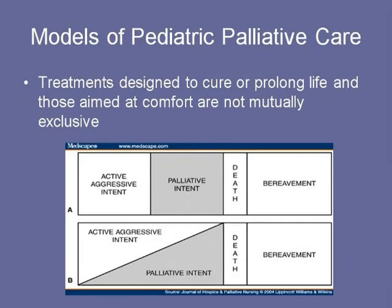If we look at the models of pediatric palliative care, treatments designed to cure or prolong life and those aimed at comfort are not mutually exclusive. The earlier model was active aggressive intent followed by palliative intent, then death and bereavement. The updated model shows that as active aggressive intent decreases, palliative intent increases — we can really do both. Hopefully, when the law is passed allowing children to have concurrent treatment and be on hospice, they can get radiation treatment paid for by insurance or Medicaid while also benefiting from a hospice program.